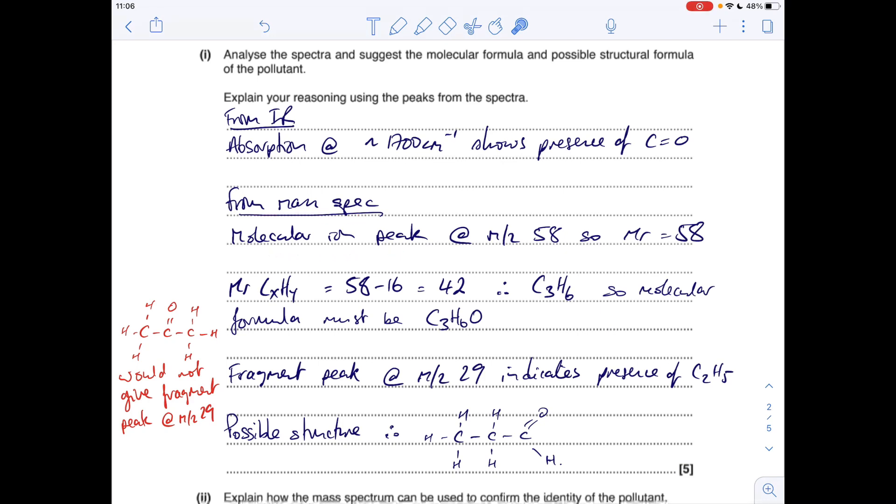So get that bond into your answer. And then from the mass spectrum we've got a molecular ion peak at M over Z 58, so the MR is 58. The MR of the CxHy part, remember the formula is CxHyO, so the mass of the CxHy part is going to be the total mass minus 16 for the oxygen, so 42. So the rest of the molecule must have three carbons and six hydrogens, so the molecular formula is going to be C3H6O.